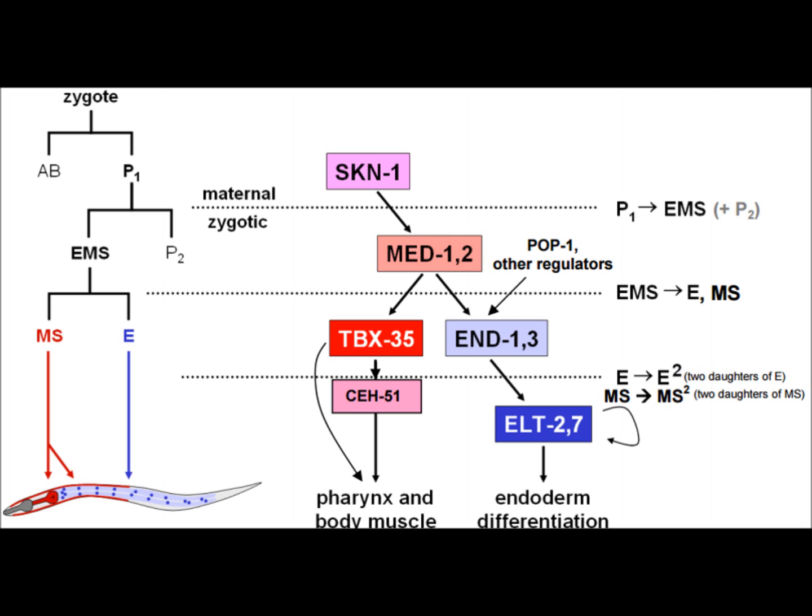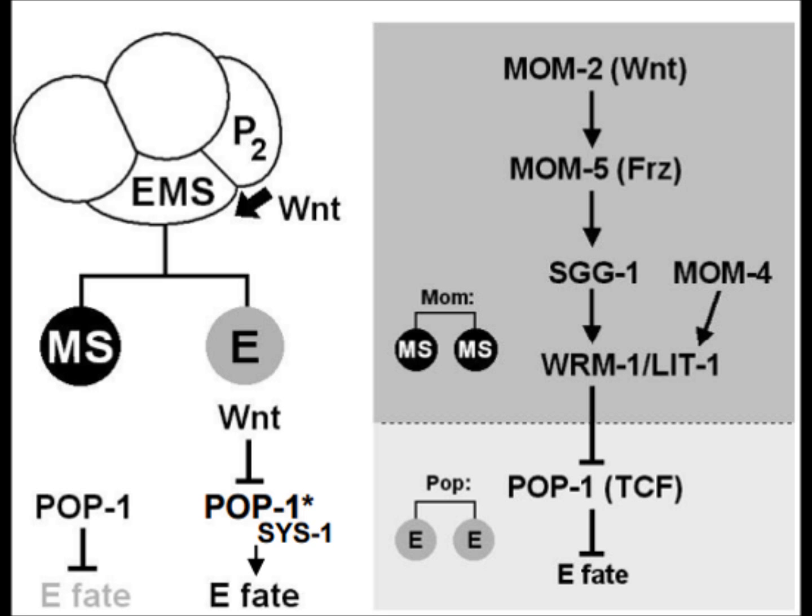Something must occur where cells from the same source, which is EMS in this case, end up expressing different genes to specify different fates, which is MS versus E. So Wnt signaling actually plays a role in differentiating the MS and E cells.